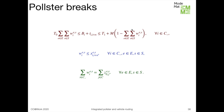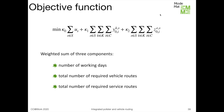To finish the description of the model, let's consider its objective function. It is the weighted sum of three terms that measure: the number of working days (days with schedules assigned to them), the total number of required vehicle routes, and the total number of required service routes for the pollsters.